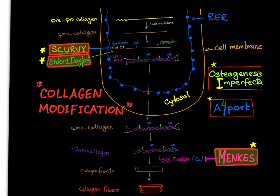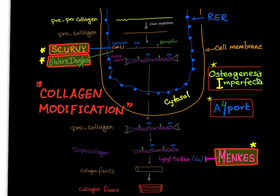If any abnormality occurs in this pathway, disease results. A problem with vitamin C causes scurvy, which leads to a defect in collagen modification. This is why scurvy presents with bruising — due to a lack of collagen fibers in the walls of blood vessels. Ehlers-Danlos syndrome type 6 also occurs at the hydroxylation step.